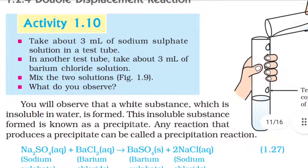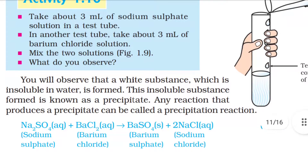1.2.4 Double Displacement Reaction — Activity 1.10: Take about 3 ml of sodium sulfate solution in a test tube. In another test tube, take about 3 ml of barium chloride solution. Mix the two solutions. You will observe that a white substance which is insoluble in water is formed. This insoluble substance formed is known as a precipitate. Any reaction that produces a precipitate can be called a precipitation reaction.